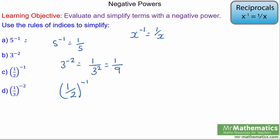Moving on: 1 half to the power of negative 1. We'll go through this the long way. Negative means 1 over, so we get 1 over a half. We do this with dividing fractions: 1 over 1 divided by 1 over 2, which is the same as 1 over 1 multiplied by 2 over 1 — you flip it round. That gives 1 times 2 equals 2 over 1, which is just 2.